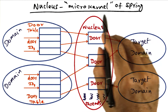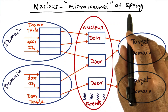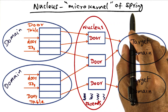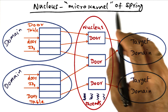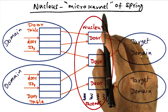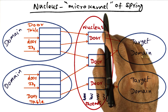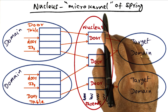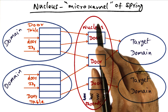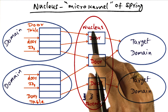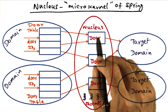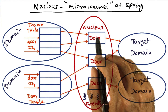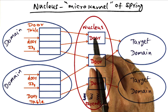Nucleus is the microkernel of Spring, and is a subset of the lead case prescription as mentioned. Nucleus manages only threads and IPC.